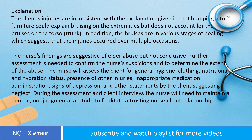Answer. Option 2 is correct. Explanation: The client's injuries are inconsistent with the explanation given — bumping into furniture could explain bruising on the extremities, but does not account for the bruises on the torso. In addition, the bruises are in various stages of healing, which suggests that the injuries occurred over multiple occasions. The nurse's findings are suggestive of elder abuse but not conclusive; further assessment is needed to confirm the nurse's suspicions and determine the extent of the abuse.